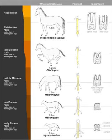In North America, Hipparion and its relatives — Cormohipparion, Nanippus, Neohipparion, and Suesshypparion — proliferated into many kinds of Equids, at least one of which managed to migrate to Asia and Europe during the Miocene epoch. European Hipparion differs from American Hipparion in its smaller body size. The best-known discovery of these fossils was near Athens.